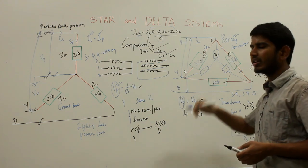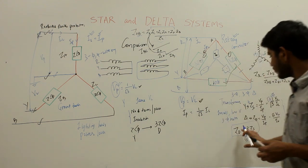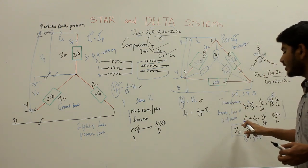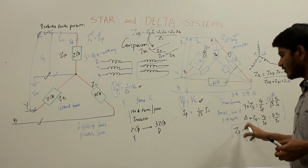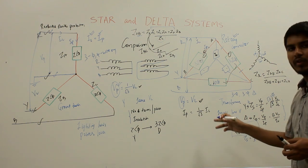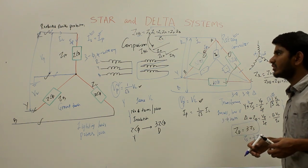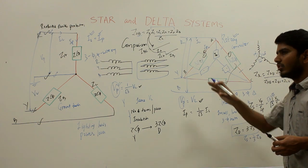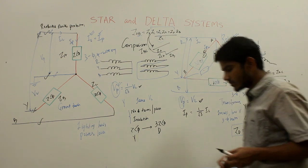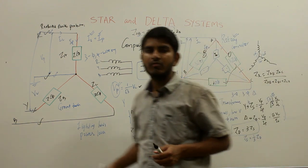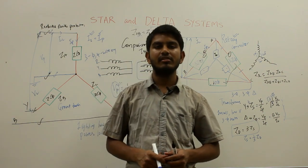This is how you perform star-delta and delta-star conversions. For a balanced system, you can simply replace each impedance Z∠φ in star with 3Z∠φ in delta. This covers the comparison and load conversion between star and delta connected systems. Please subscribe to our channel. Thank you.